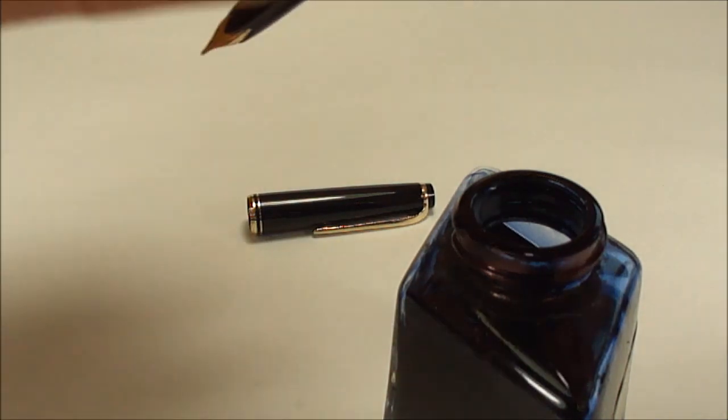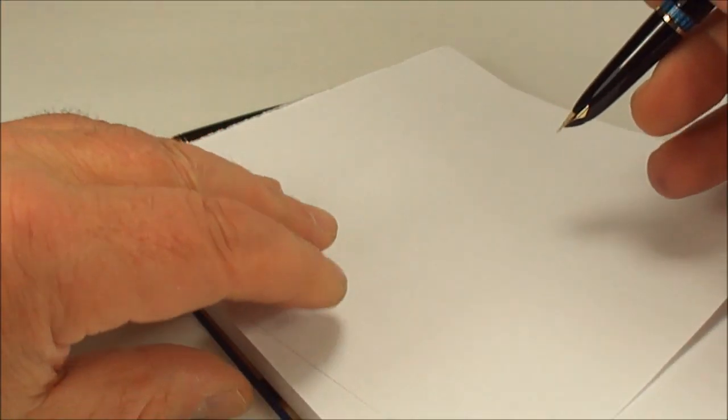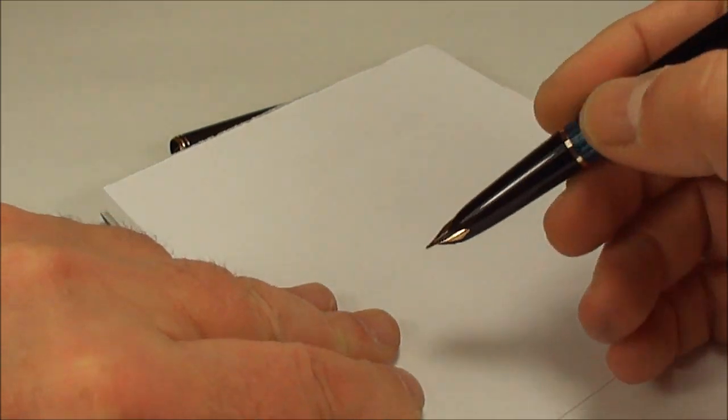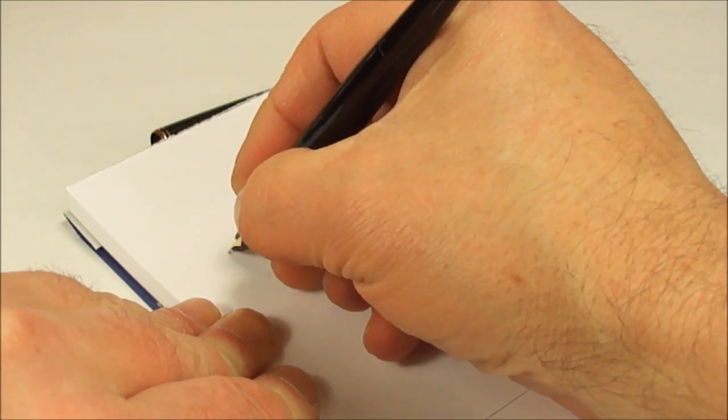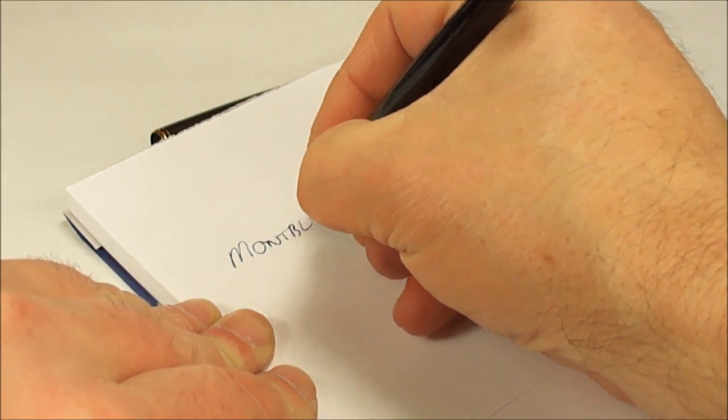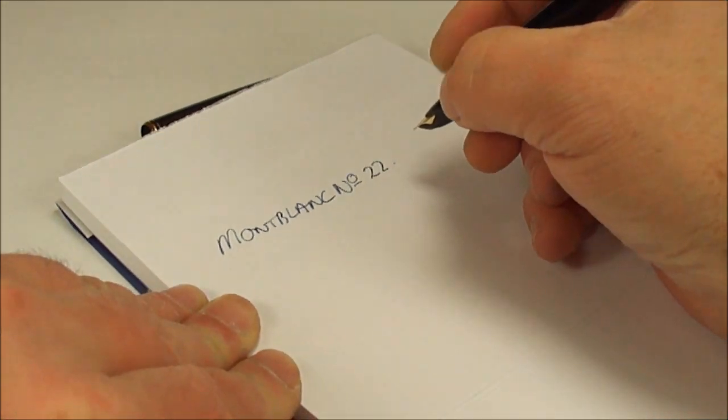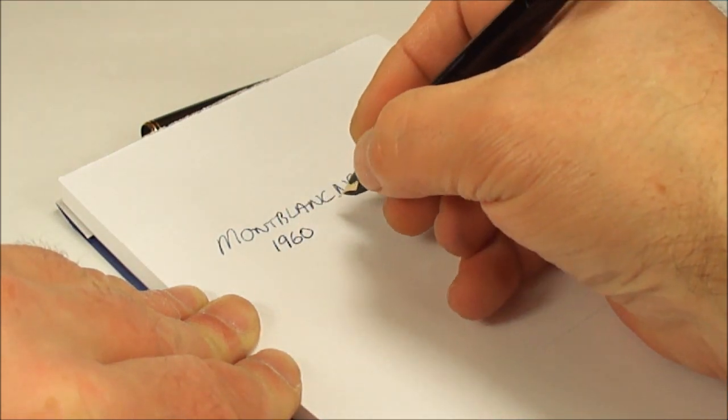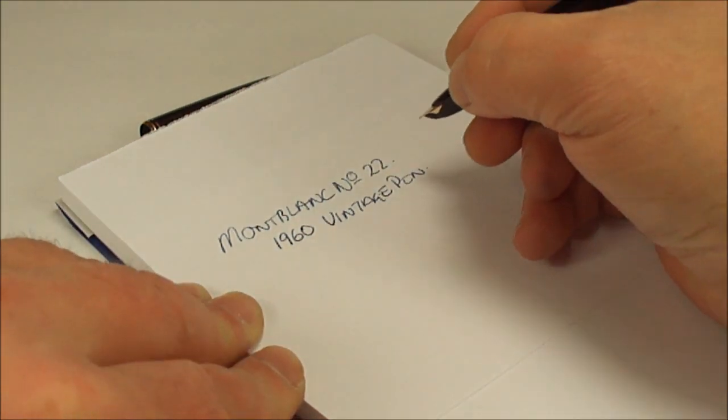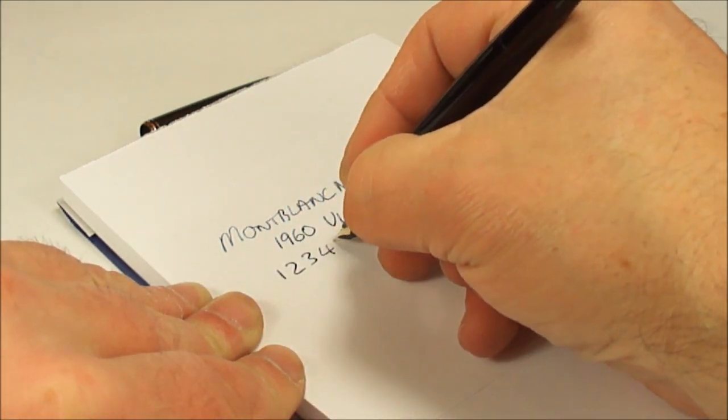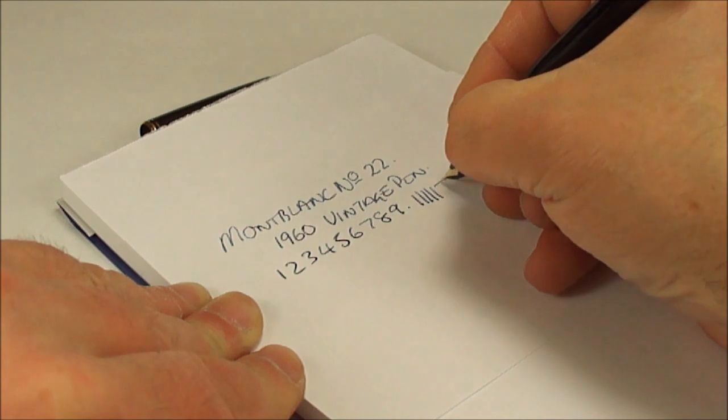Let's give the pen a wipe, put the ink to one side, and let's bring on some paper. So let's see how the pen writes. This is the first time I've actually tested it, so you're seeing what I'm seeing. So what we have is a Montblanc, and as we said this is the number 22. We're dating the pen from the 1960s. So yes, it's a vintage pen. As you can see, or as you may not see, we'll show you in a moment, it's writing with a fine line, it's writing very nicely, very smooth.